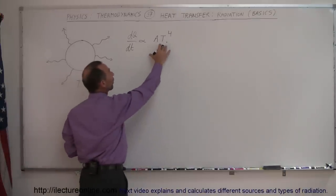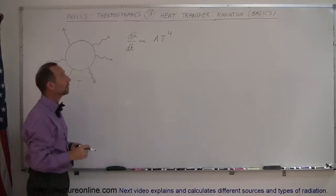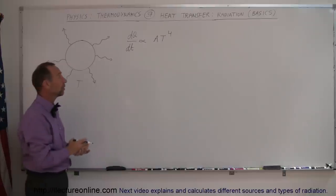Because if it's 2T instead of 1T, 2T to the fourth power will give you 16T, and therefore 16 times as much heat will be generated.